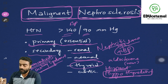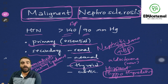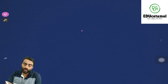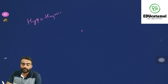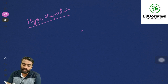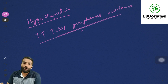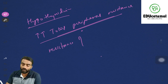But what about hypothyroidism? How does it cause increased blood pressure? If you know the answer, please comment in the comment section. Hypothyroidism is going to increase the total peripheral resistance. Total peripheral resistance means the resistance of all the resistance vessels. What are these resistance vessels? These are arterioles — small blood vessels whose compliance is very less.